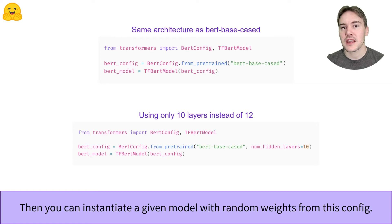We can also change any part of the configuration by using keyword arguments. The second snippet of code instantiates a randomly initialized BERT model with 10 layers instead of 12.